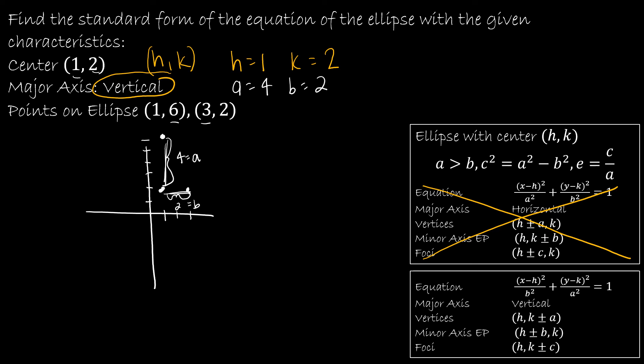So, now I can write my equation as x minus h quantity squared divided by b squared, so b is 2, so that's 4, and then plus y minus k quantity squared divided by a squared, which is 16, is equal to 1.